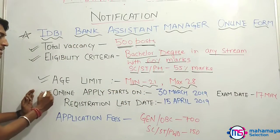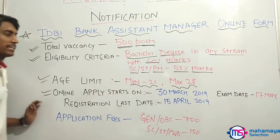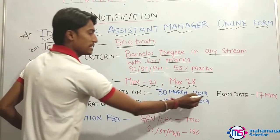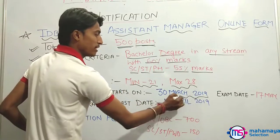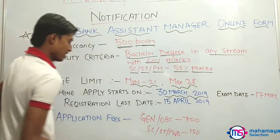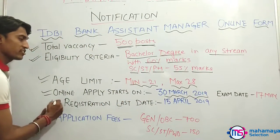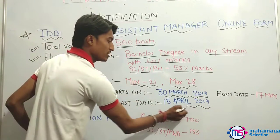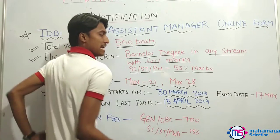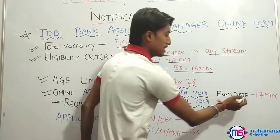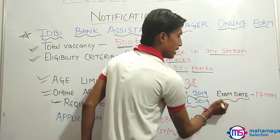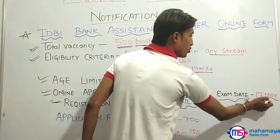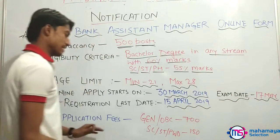When can you apply? Online applications will start from 30 March. The last date for registration is 15 April 2019. Your exam date will be 17 months — that is the first exam.